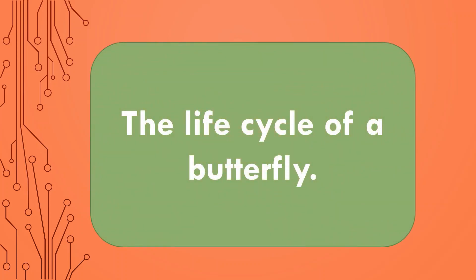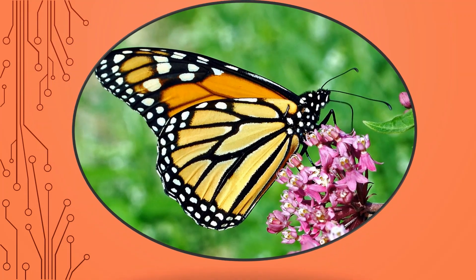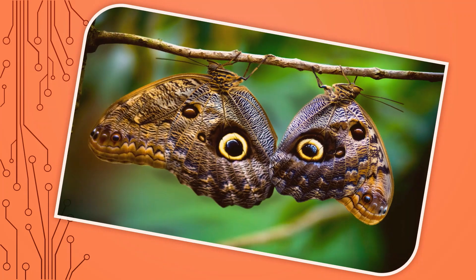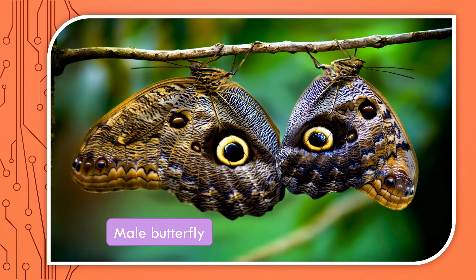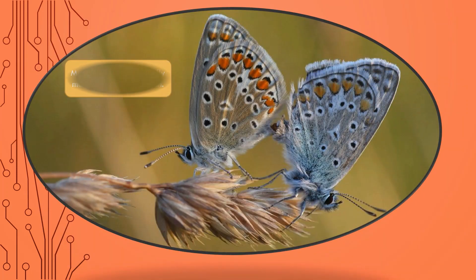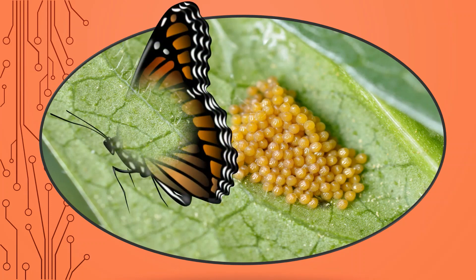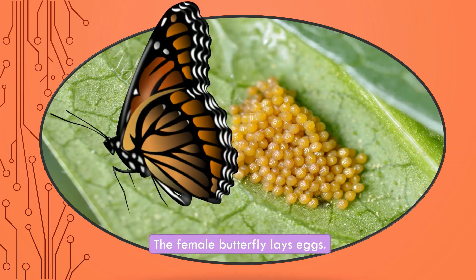The life cycle of a butterfly. This is an adult butterfly. This is the male butterfly and the female butterfly. They will mate on breeding season, and the female butterfly will lay eggs. The female butterfly brings eggs.